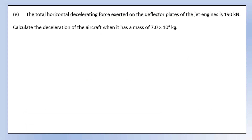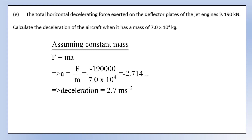The total horizontal decelerating force exerted on the deflector plates is 190 kilonewtons. Calculate the deceleration of the aircraft when it has a mass of 7 × 10⁴ kilograms. We assume constant mass since the aircraft is landing and not burning fuel. Using Newton's second law in the form F = ma, rearranging for a gives a value of minus 2.7, so the deceleration is 2.7 meters per second squared.